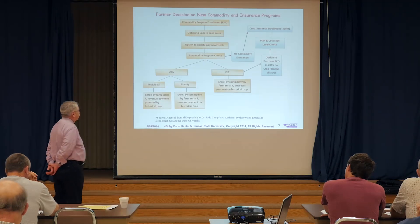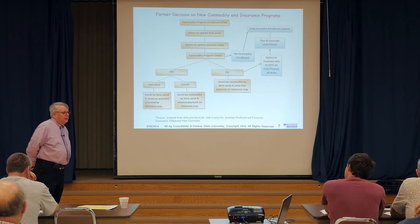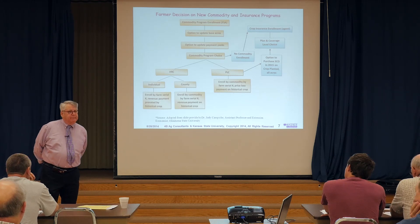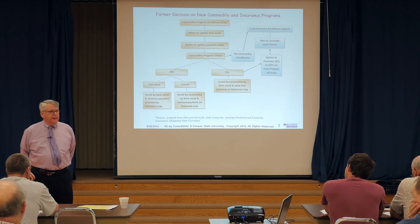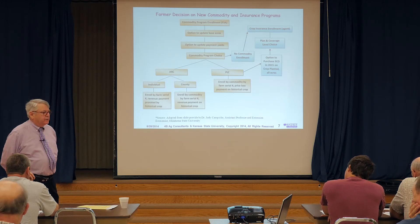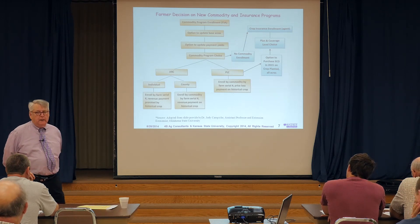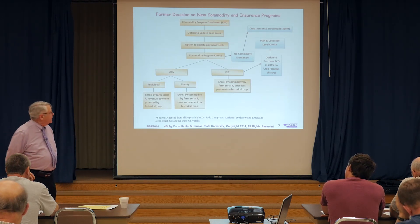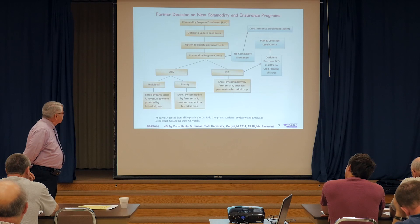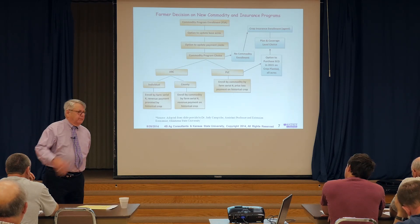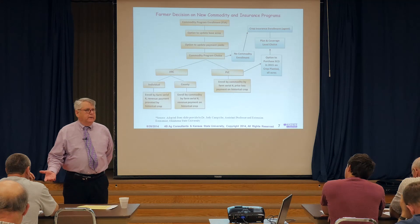If you take ARC at the county level, then it's crop by crop — there's no aggregating across crops. And if the county triggers, you get paid the full amount. At the farm level, you could have a yield where the bottom falls out for some reason that doesn't drive the county yield low.